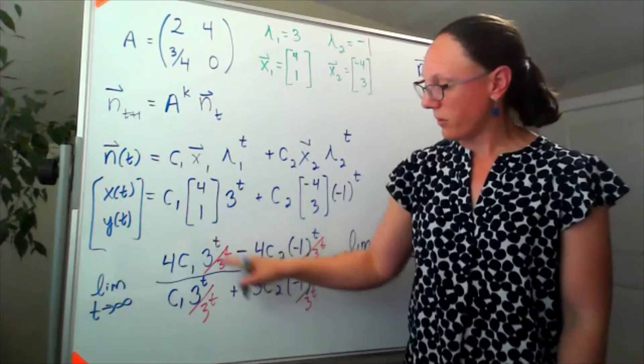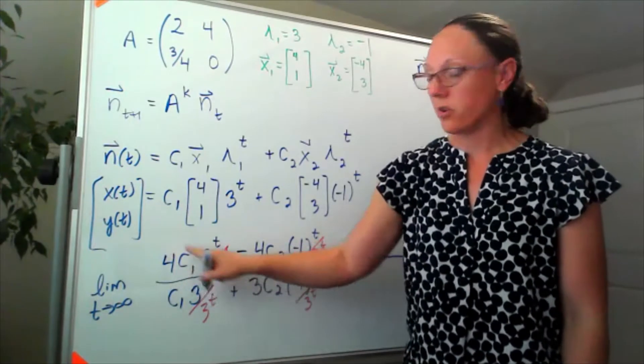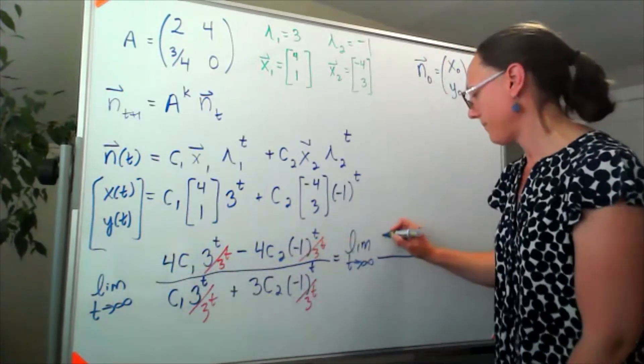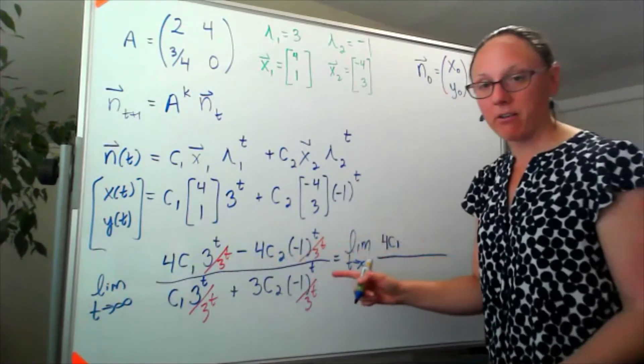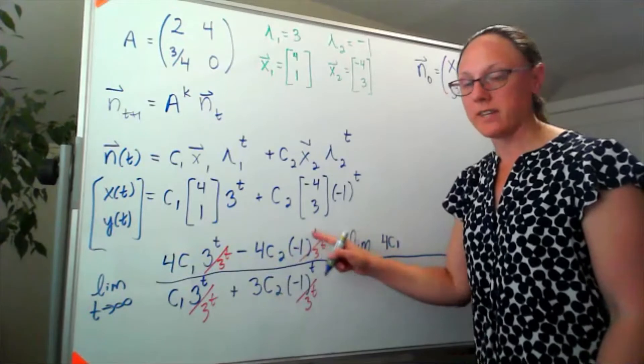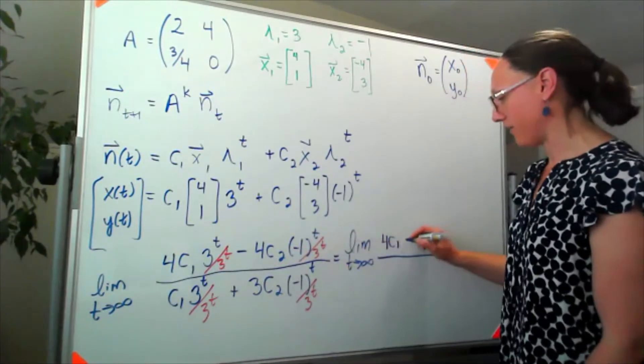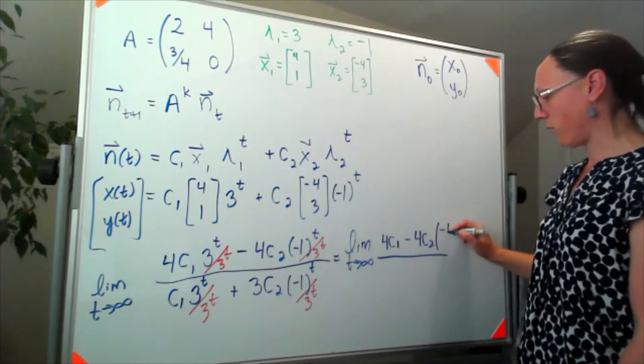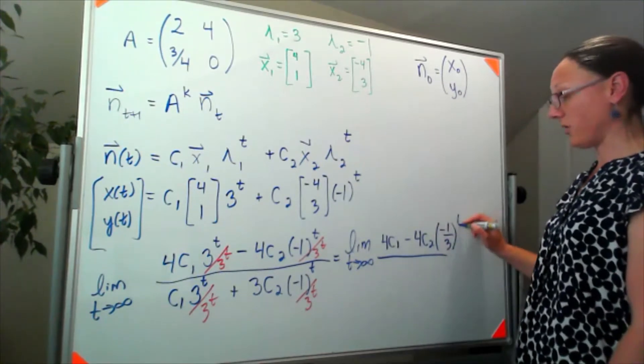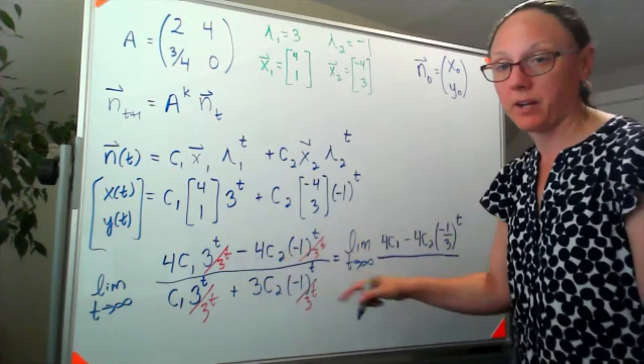Now what that's going to do for us as a limit: well, now on the top those 3 to the t's have cancelled out and I'm just looking at 4c1 minus... and here I'm going to be careful about this. Negative 1 to the t over 3 to the t, I'm going to regroup that to say negative 1 third raised to the t power.